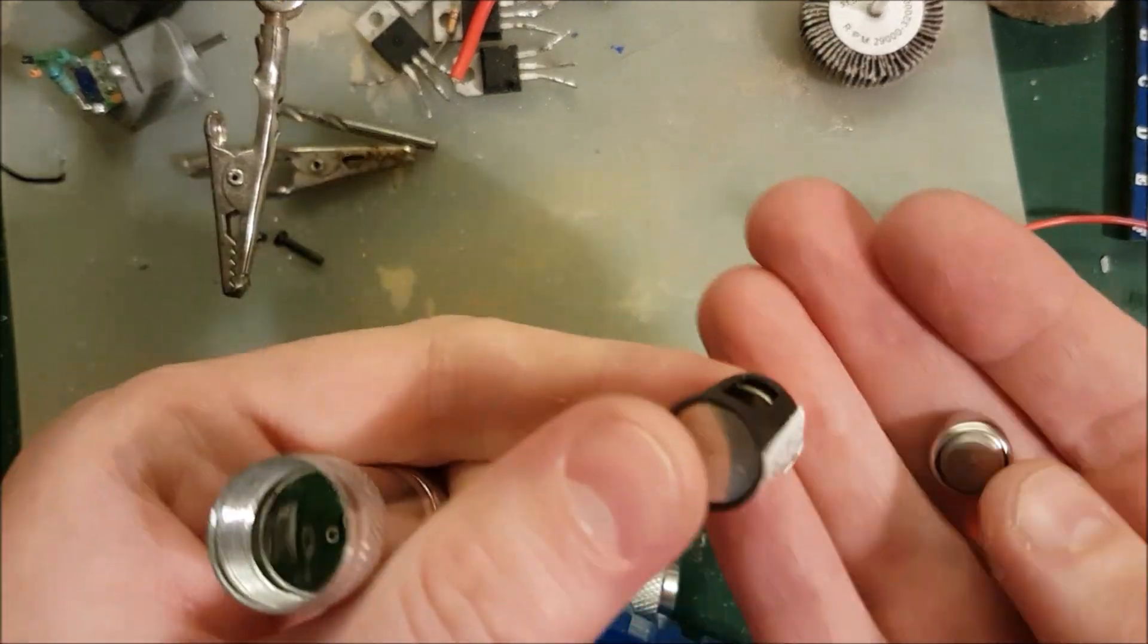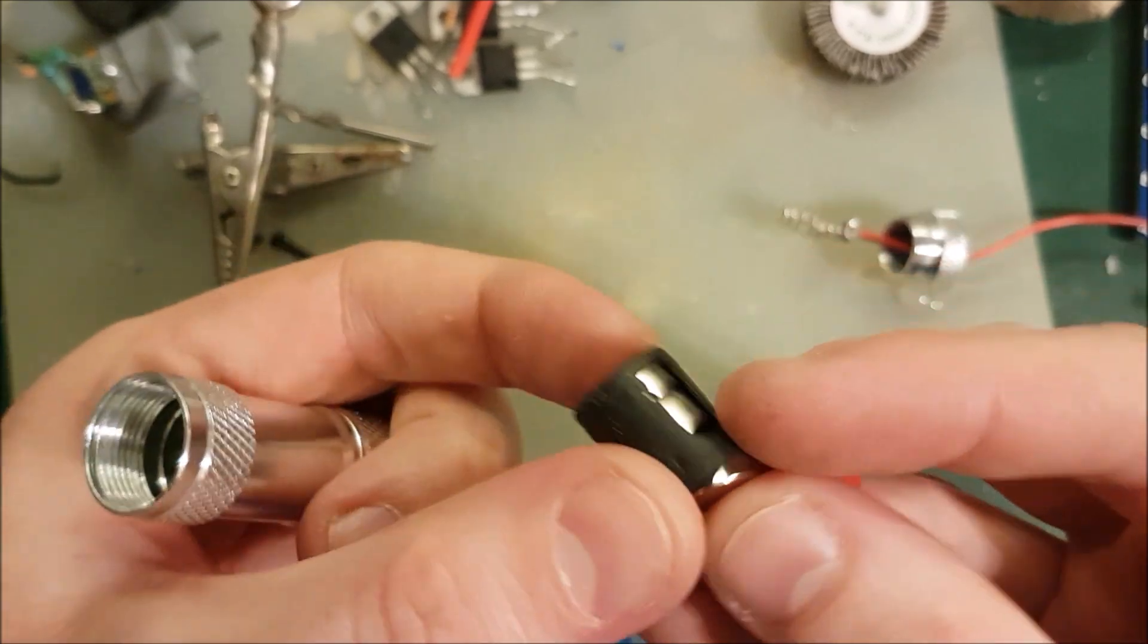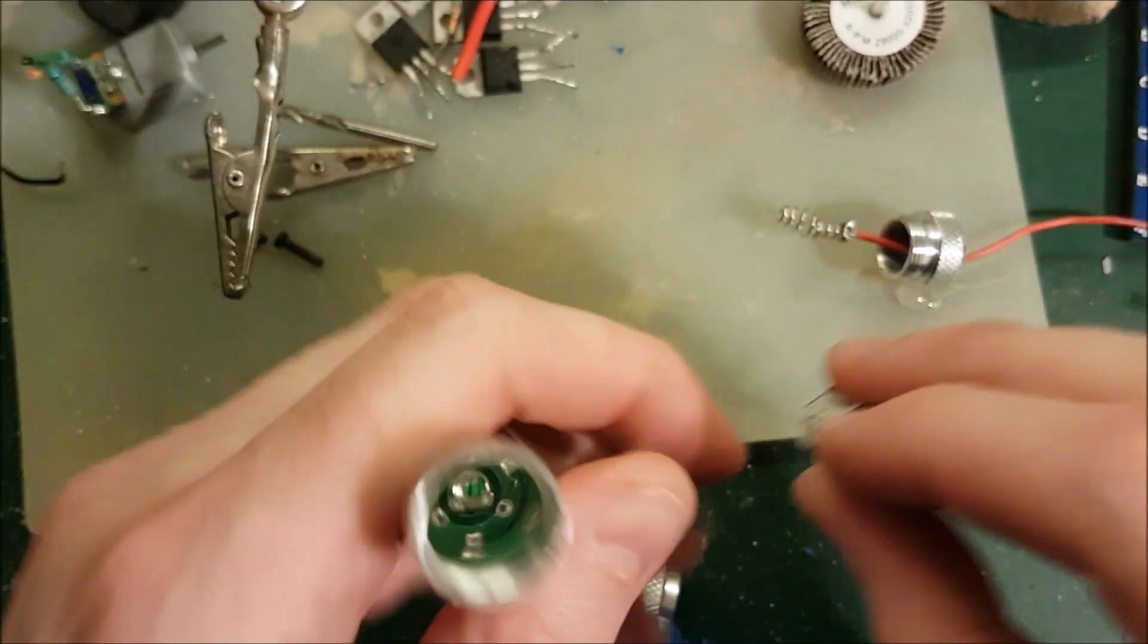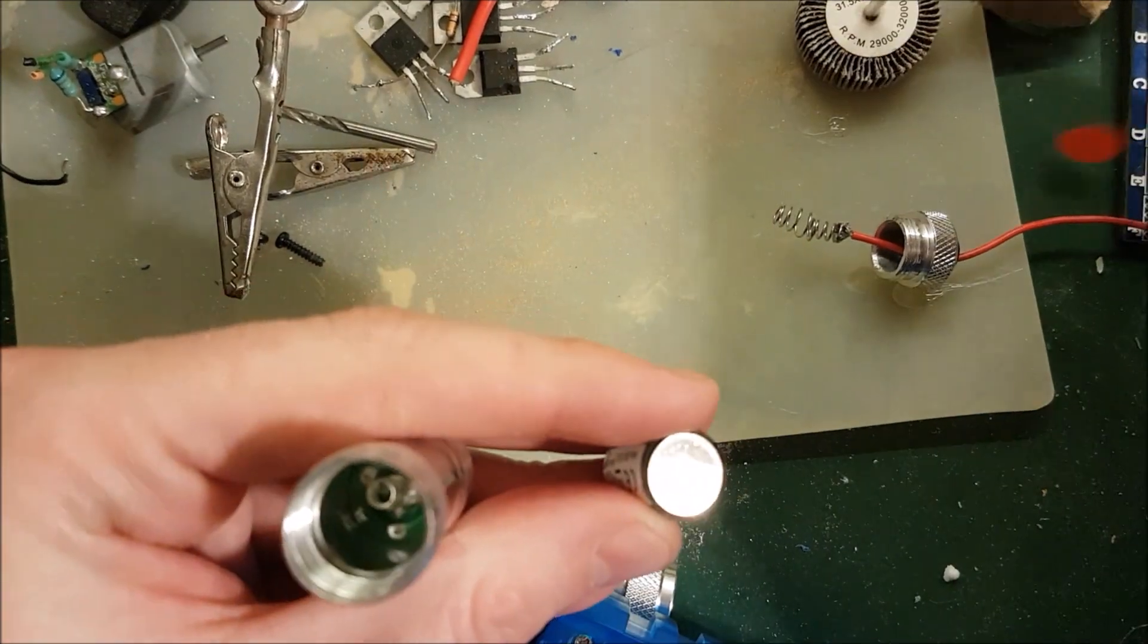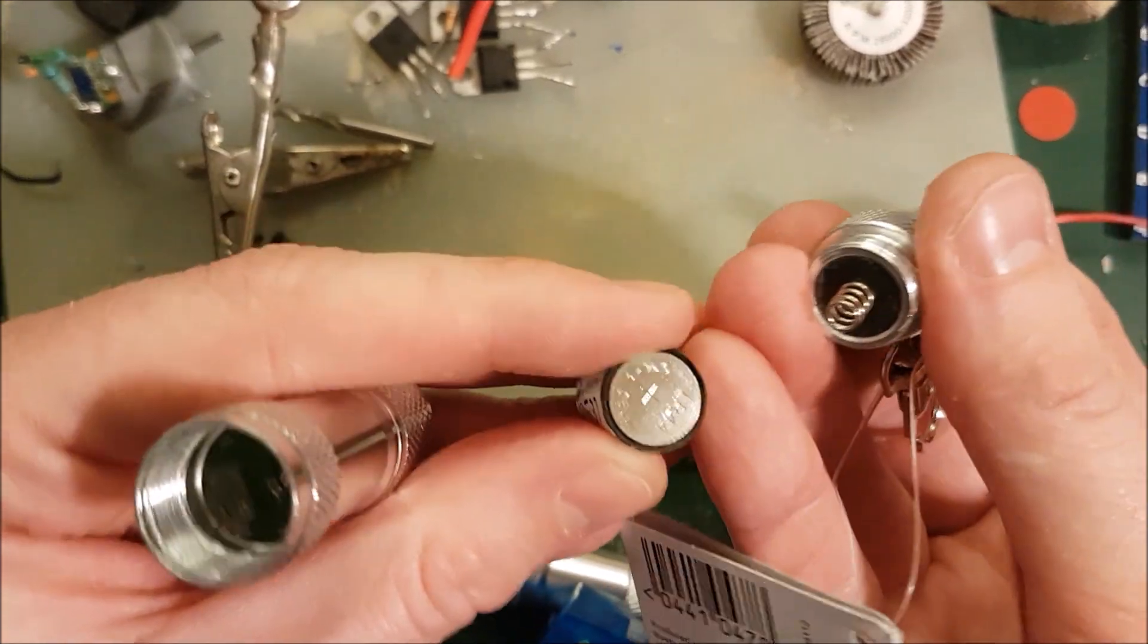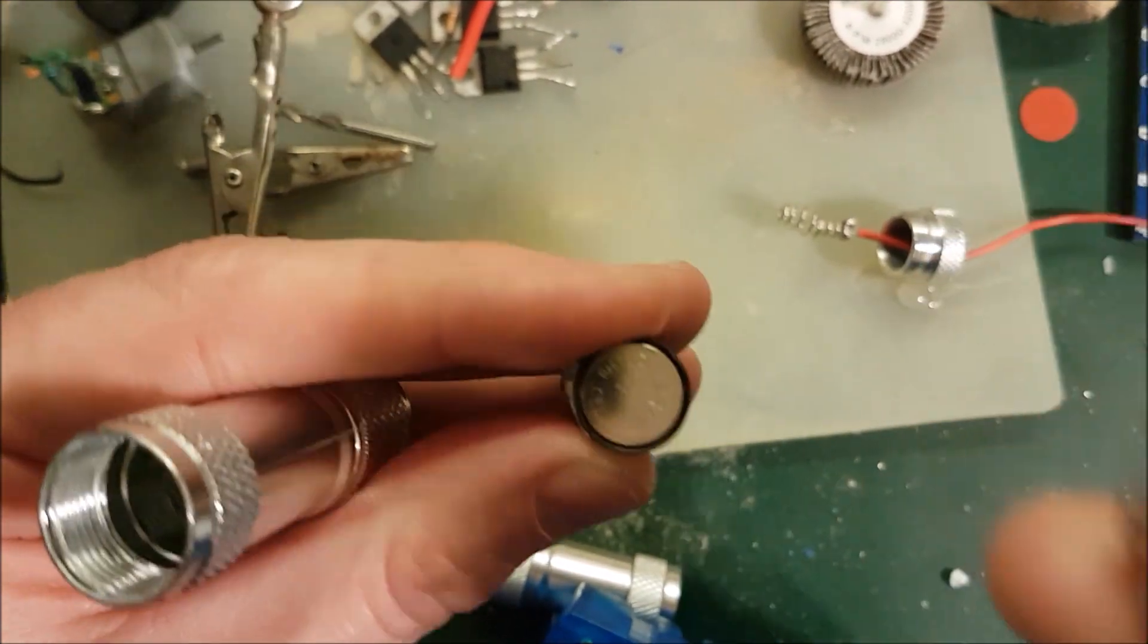You've got the wee battery holder, like so. That's just a spacer and then the clicky thing on the back. And now obviously I want to get rid of that.